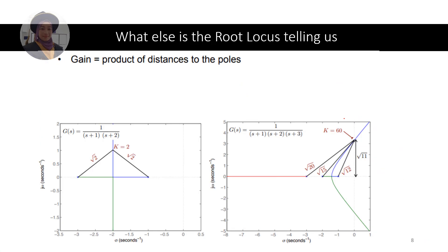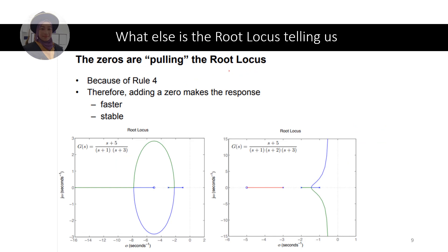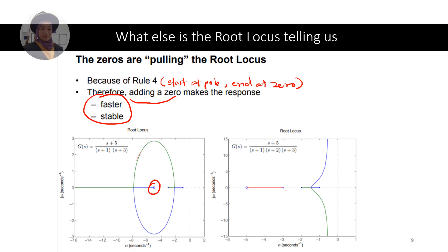Beyond the rules, the root locus also tells us about gain K, which is the product of the distances from the test point to the poles. The distance to the poles can be used to determine the system gain. Also, zeros pull the root locus — because of rule 4, the locus starts at poles and ends at zeros, so adding a zero makes the system response faster and more stable, as shown in these examples.